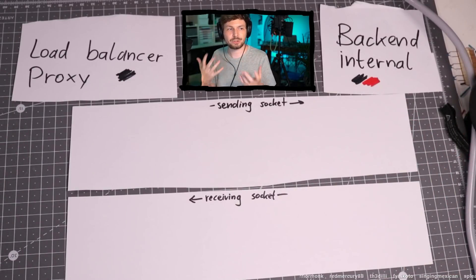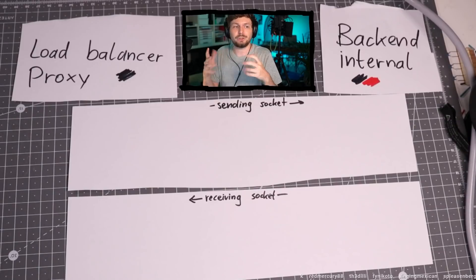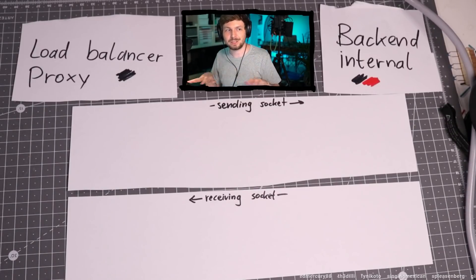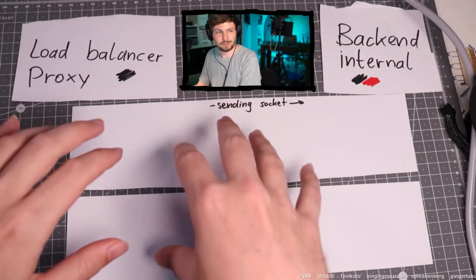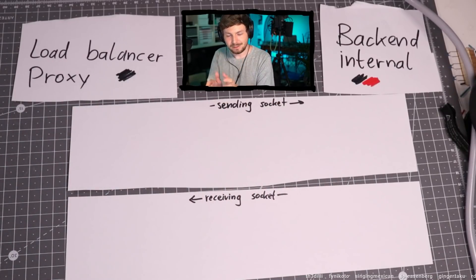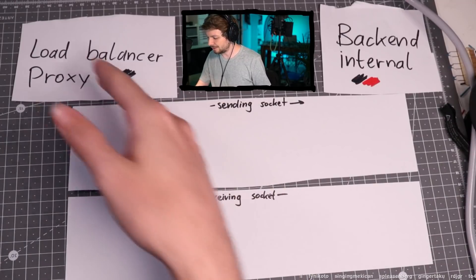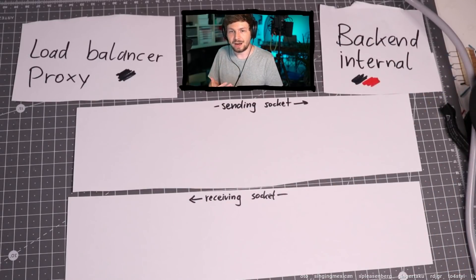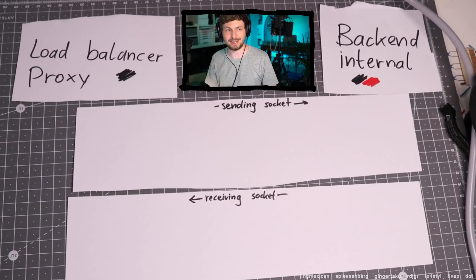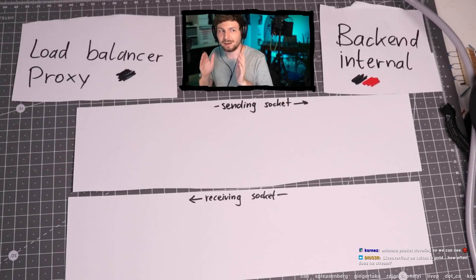A socket is just a stream of bytes. You don't really need to know how networking with TCP or HTTP works underneath. How sockets work is: you write data in and you can read that data again. It's just a stream of data — you write zeros and ones in there. The load balancer writes on one socket and the backend reads the data coming in. When you think of a request coming in, this request has a start and an end, and you need to define what the start and end is.